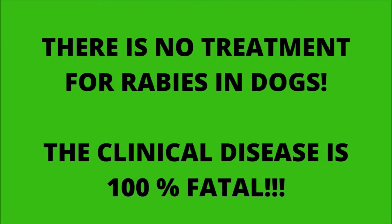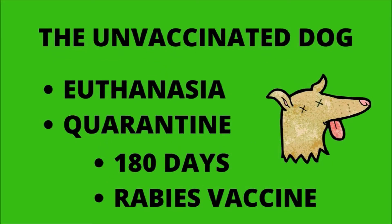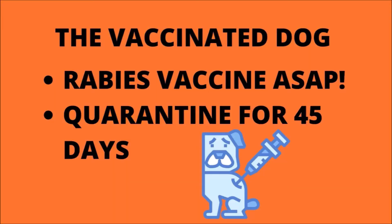The death rate approaches 100 percent. If an unvaccinated dog has been exposed to the rabies virus, the recommended action is immediate euthanasia. Another option is strict quarantine and isolation for 180 days. If healthy, the dog should be vaccinated one month before release from quarantine.